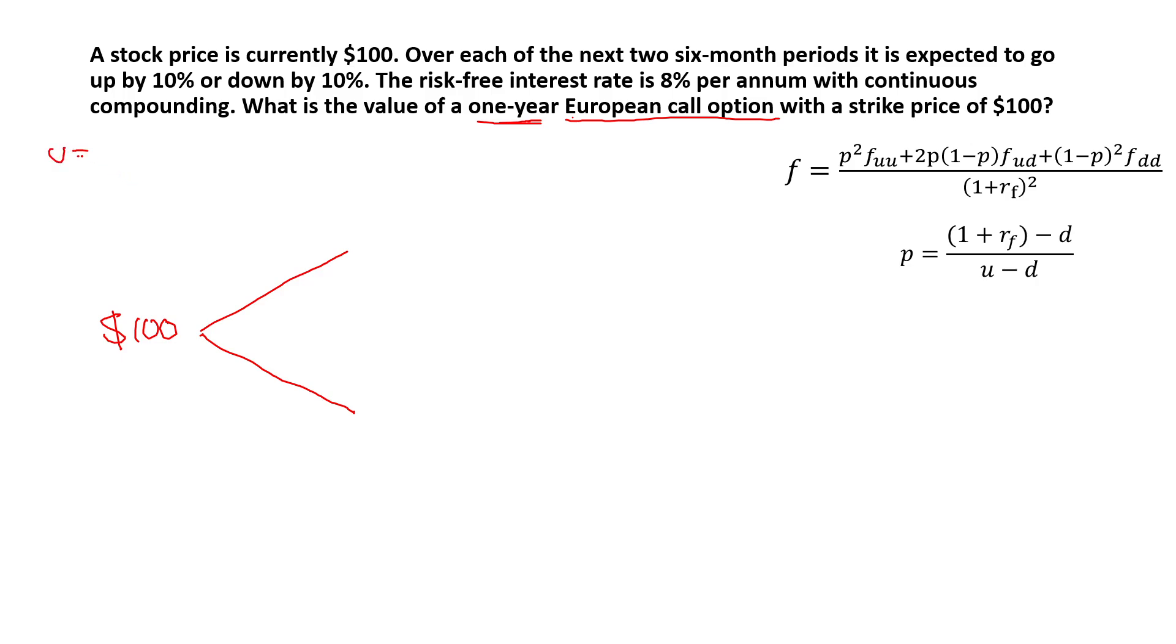We said U is the magnitude of an up jump. In order to calculate this, we need to do one plus the percentage by which it's going up. In this case, it says it's expected to go up by 10% or down by 10%. So one plus 10% in decimal places, one plus 0.1, is equal to 1.1. In order to find D, the magnitude of a down jump, we do 1 minus the 10% because it goes down by 10%. And this is 0.9. Therefore, now what we do, in order to find the share prices, we do $100 times U. So 100 times 1.1 is 110. And 100 times 0.9 is $90.